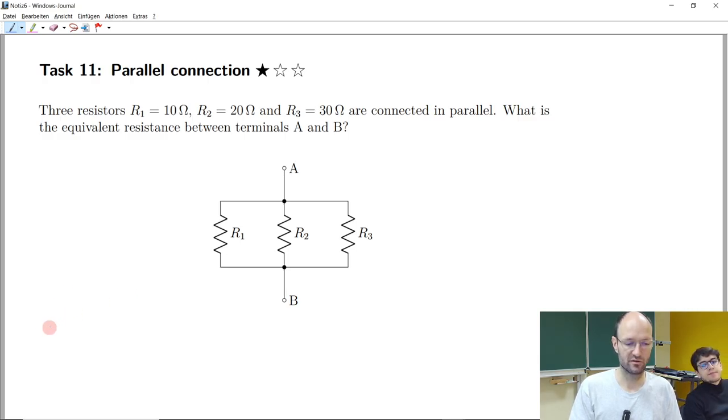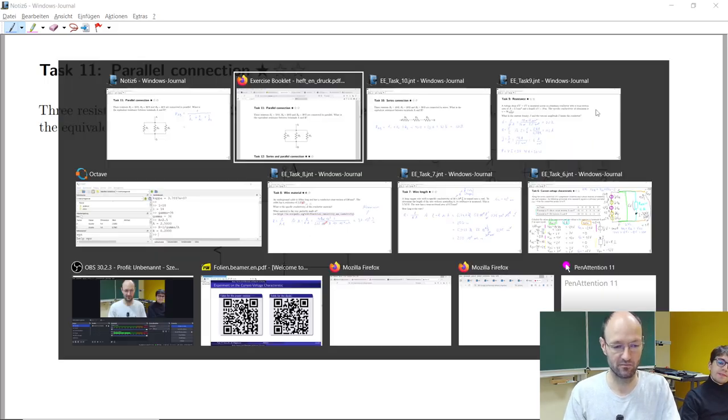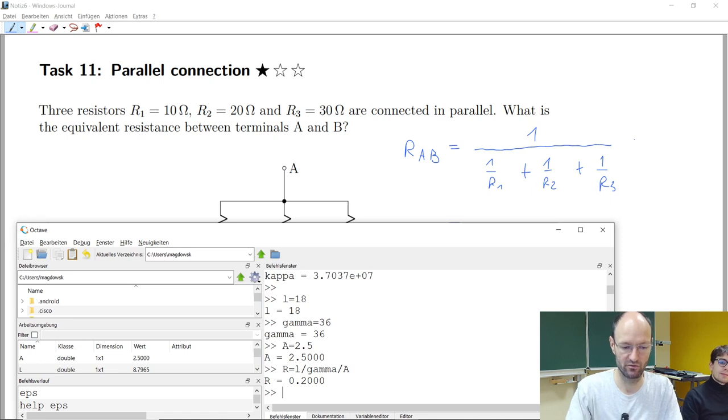And I will once again call this R_A_B. So how do we calculate equivalent resistance in this case? Yeah, so we need this one over one over R1 plus one over R2 plus one over R3. And I will not insert the values because it's too much effort to write it down. But we can think about the units. If we have one over ohm, it will be Siemens. And if we have then one over Siemens, we get once again at the end ohm. So from the units, it does make sense.